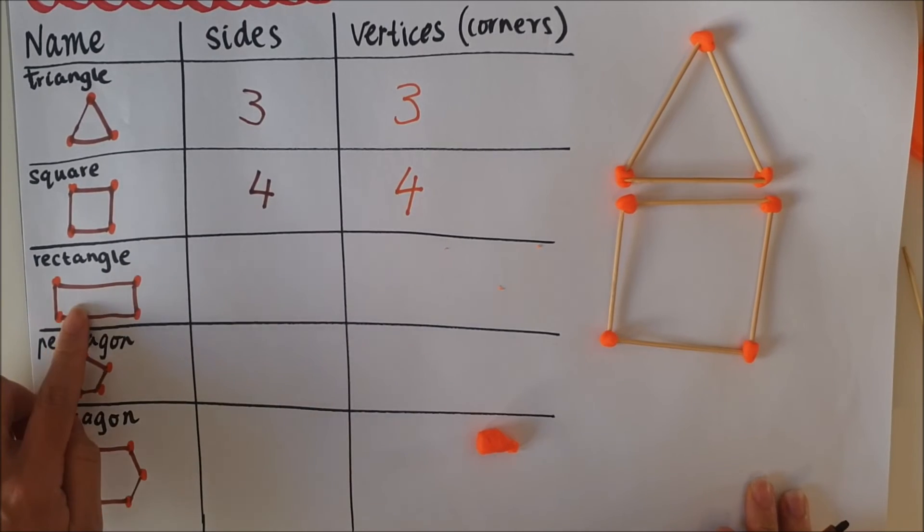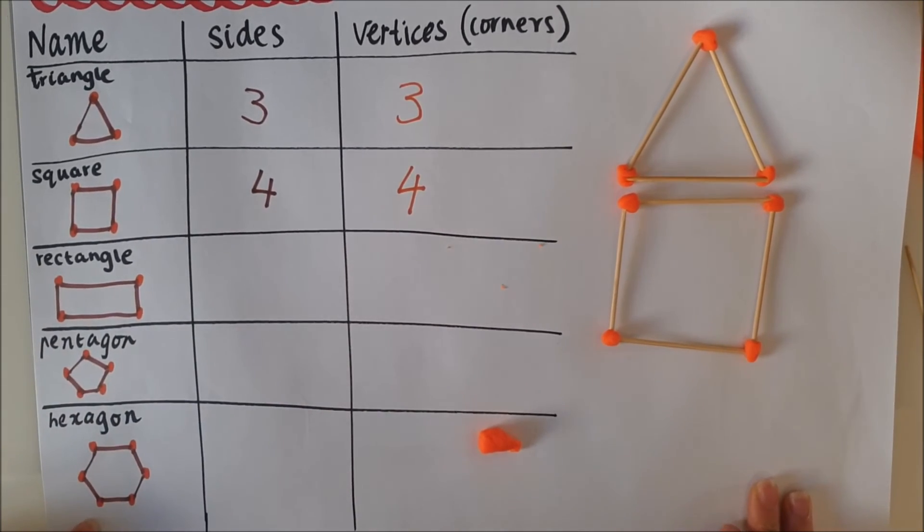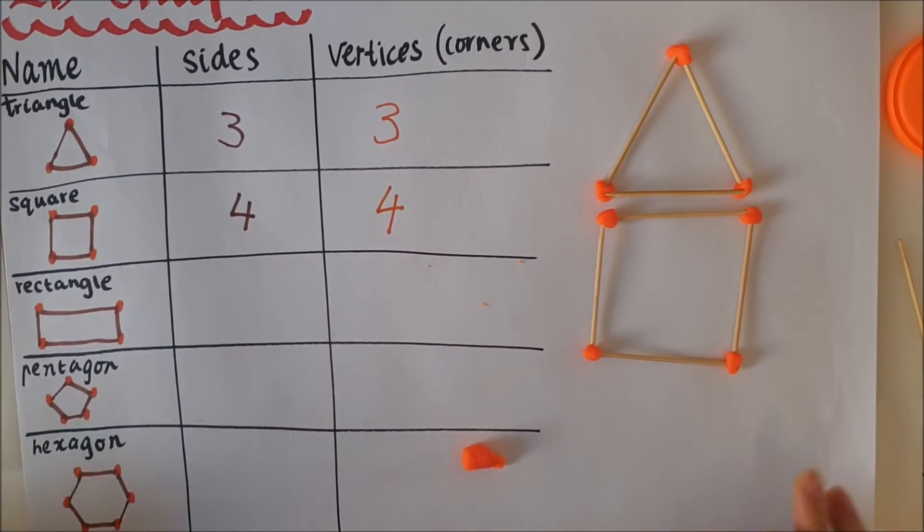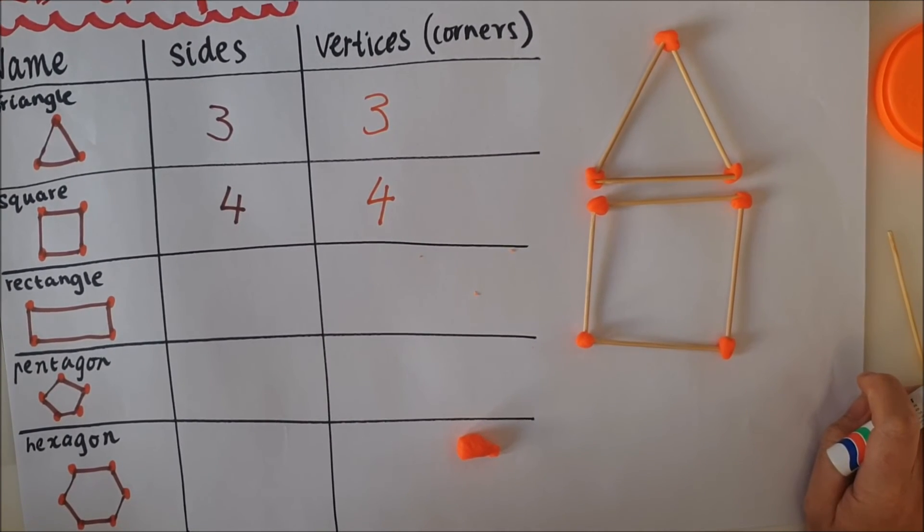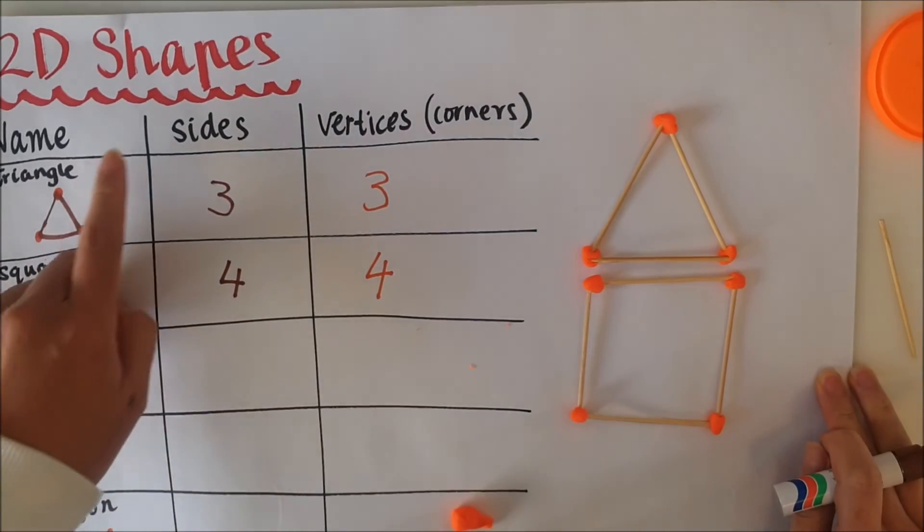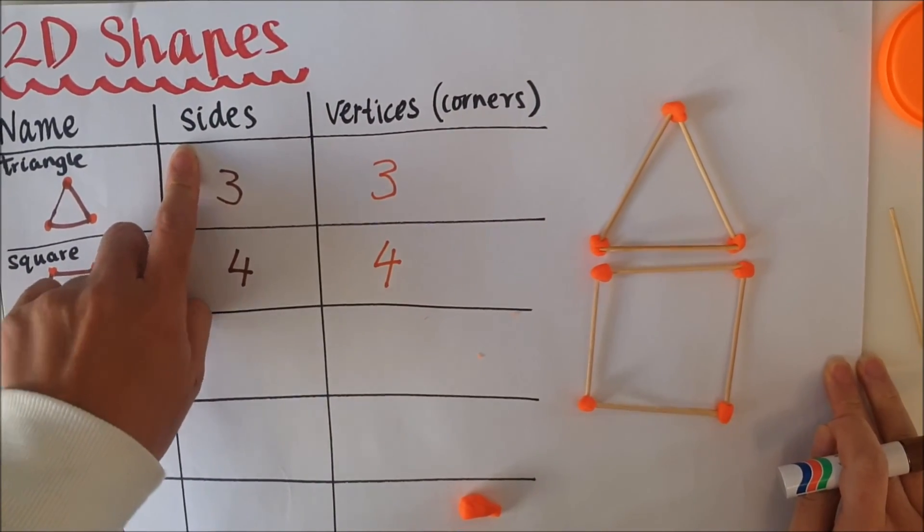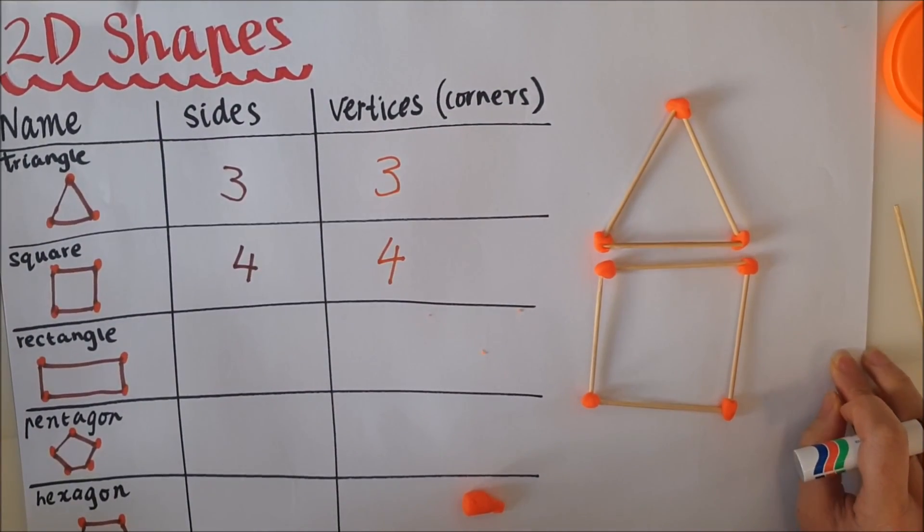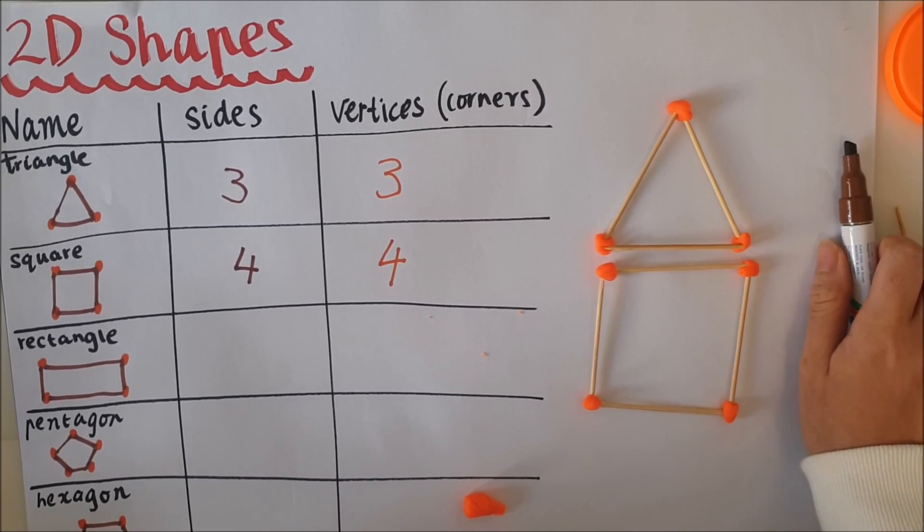Now I've still got a rectangle, pentagon and hexagon to go. I think I'll leave that with you and if you wanted to add more shapes you can do that too. So this is identifying the sides and the vertices, the features of 2D shapes. Good luck!